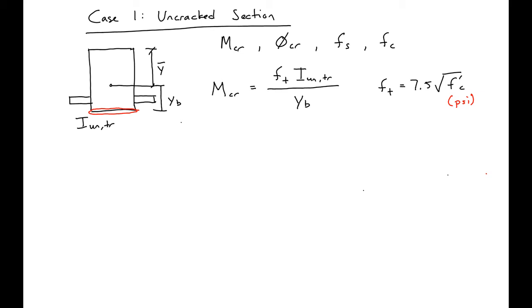Our curvature can then be found based on our strain diagram. We know the distance from the top of our strain diagram to the centroid is our Y bar. Our YB is the distance to the bottom fiber.